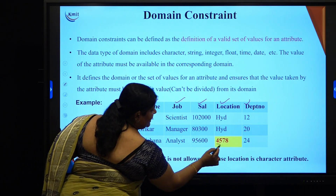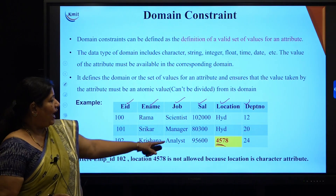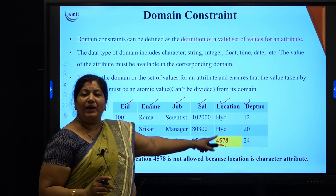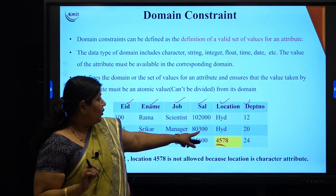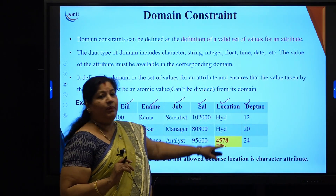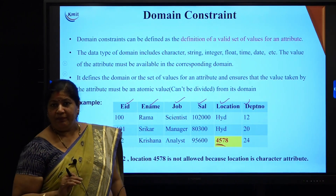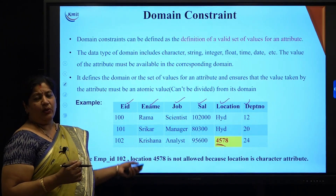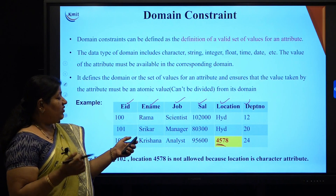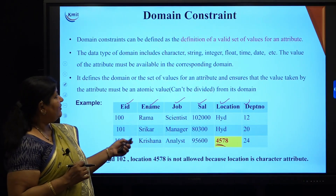For example, if you see here, location has values 4, 5, 7, 8 which is numeric, only numeric values, whereas it should be a string value. So that way we can try to restrict or specify the domain constraints.